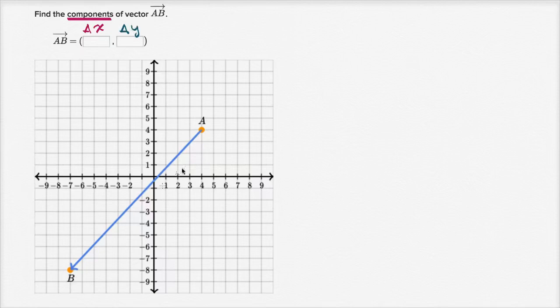To think about that, let's just think about what our starting and final points, our initial and our terminal points are. So this point right over here, point A, its coordinates are four comma four.